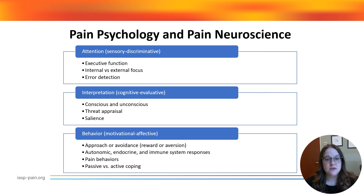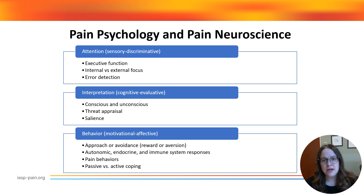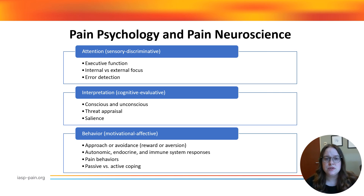These brain regions are involved in cognitive-evaluative processes or interpretation, motivational-affective processes or behavior, and overall learning. The many modalities in pain psychology use skill learning, behavior change, emotion processing, and desensitization strategies to address maladaptive learning processes and reduce distress associated with symptoms.